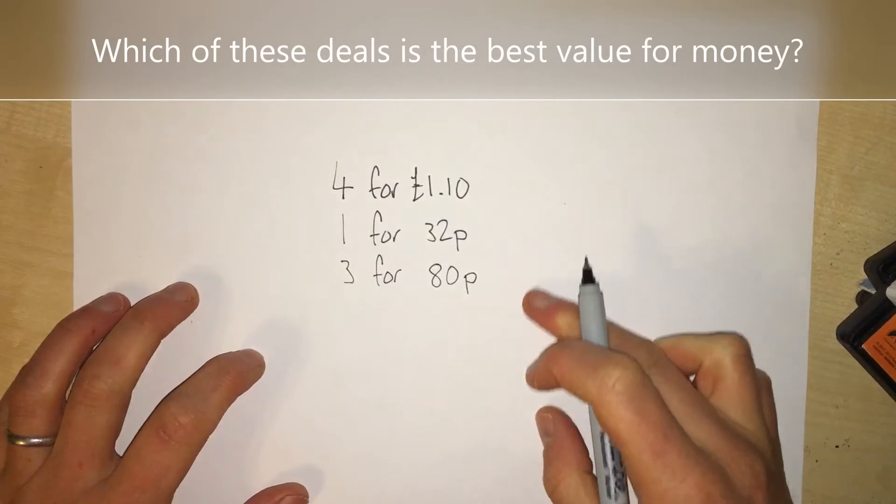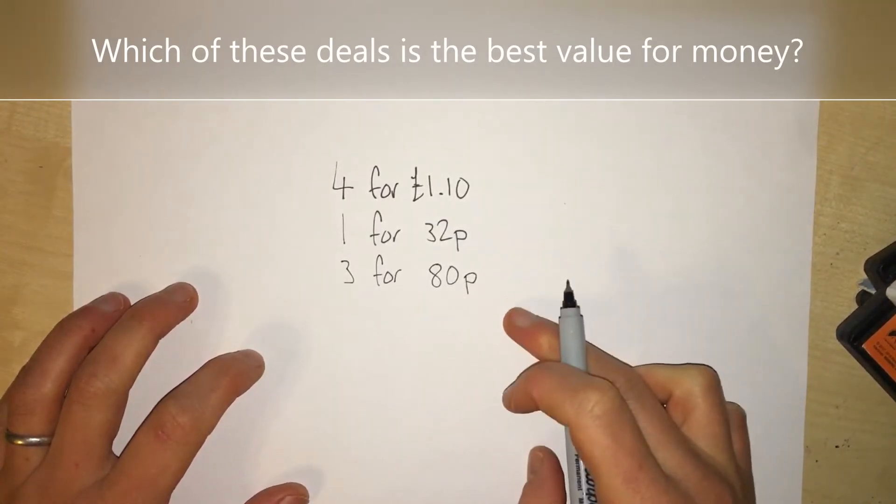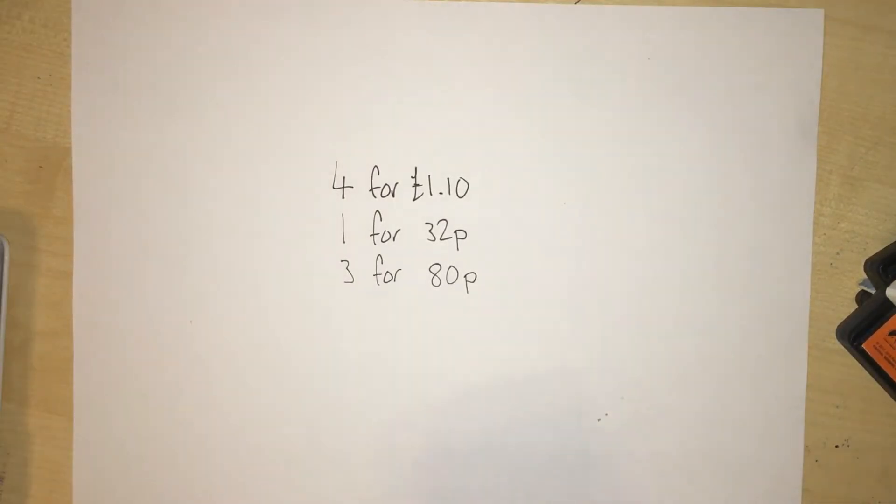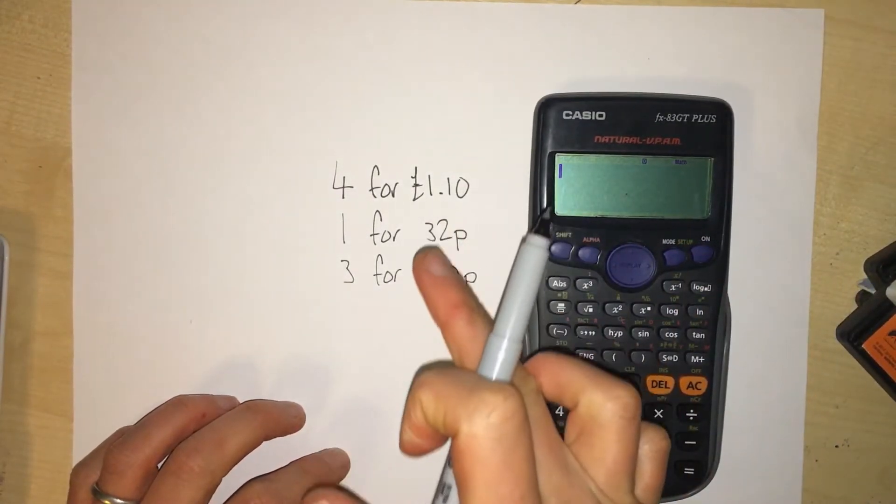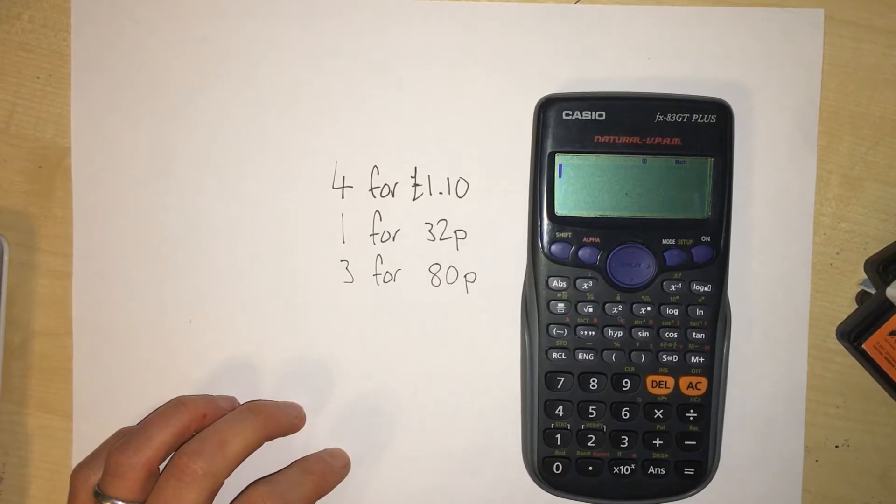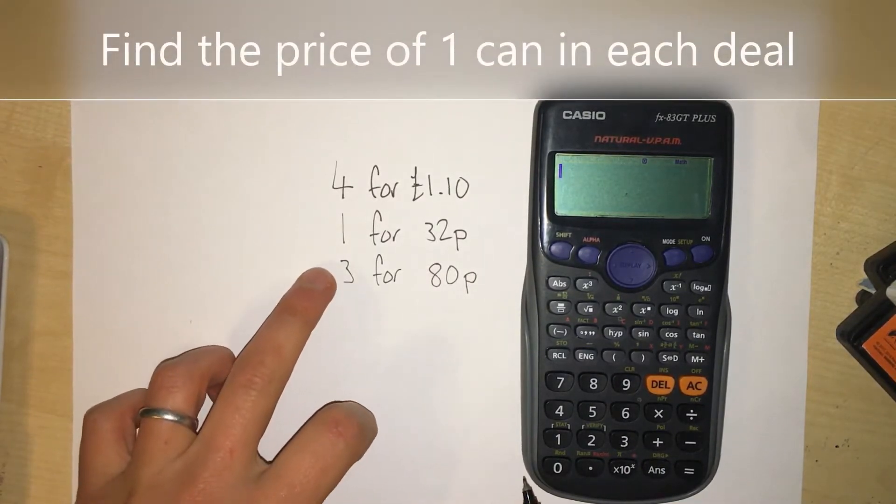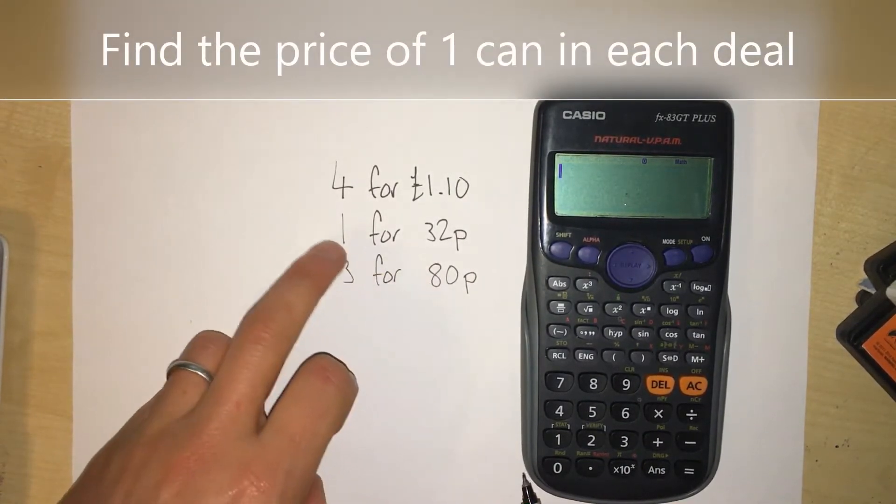Now which of these deals is the best value for money? Well, with a calculator I could work out how much one can of beans costs in each situation. I've already got the middle one - one for 32p - but how much is one can when I can buy four for £1.10?